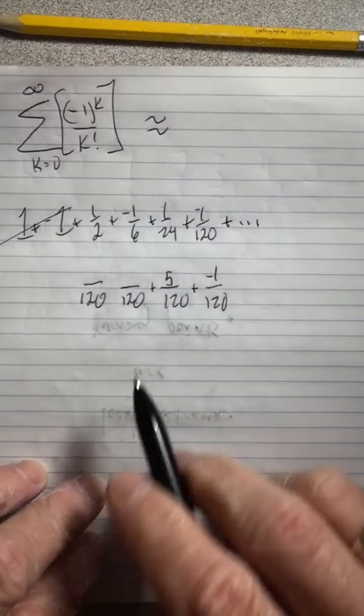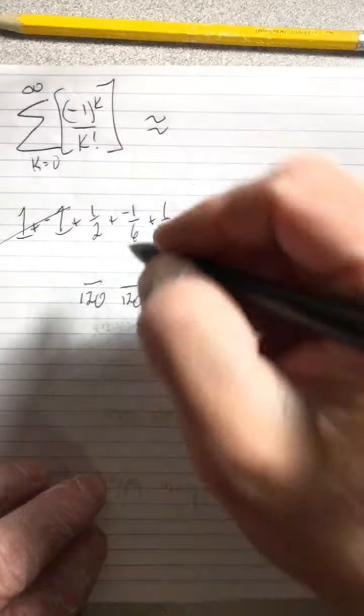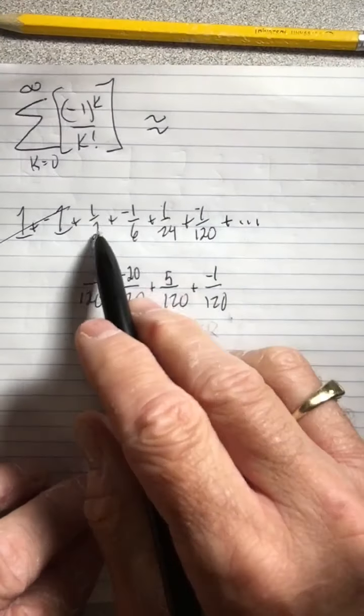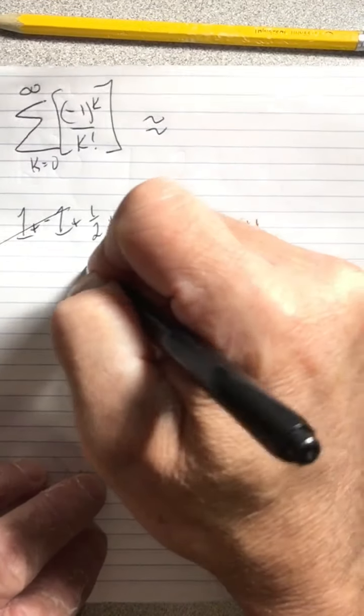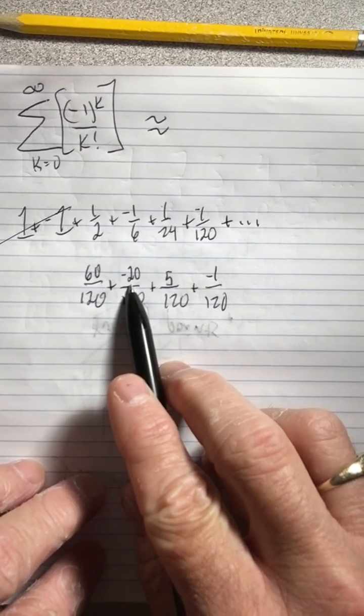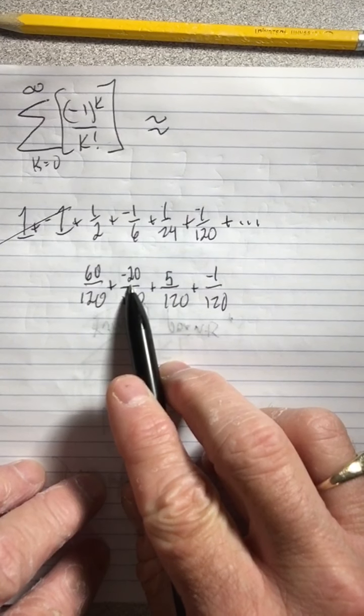And then 6 goes into 120... well, it goes into 12 twice, so it must go 20 times. So this gives me a negative 20. And then 2 goes into 120 sixty times, so this is 60. We're adding all this up, so I have 60 minus 20, that's going to give me a 40.